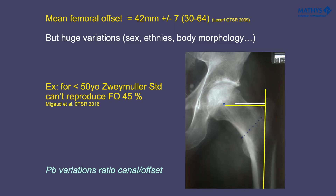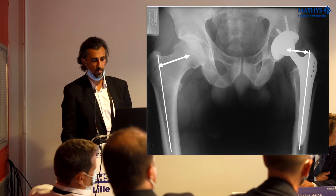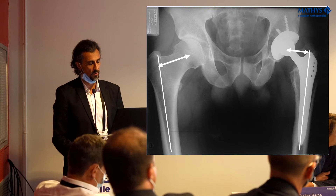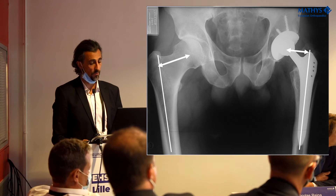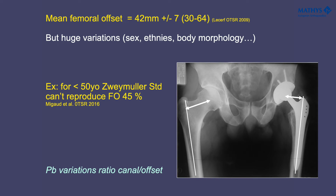As you can see, when we have a decrease of femoral offset, it is not a good outcome because there is a risk of dislocation, muscle weakness, and so on. Moreover, in these young patients we often see variation of the ratio between the femoral canal and the offset, and sometimes it is very difficult to adapt the femoral offset according to the stem you want to use.